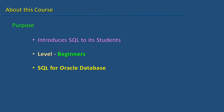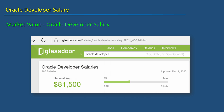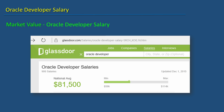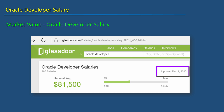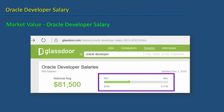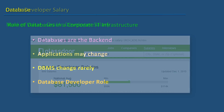This course teaches you the SQL implementation of Oracle for Oracle Database System, which is one of the leading RDBMSs in the industry. A quick search for Oracle Developer Salary in Glassdoor.com reveals that the national average is US$81,500 as of December 1, 2015. The range is between US$59K and US$114K.